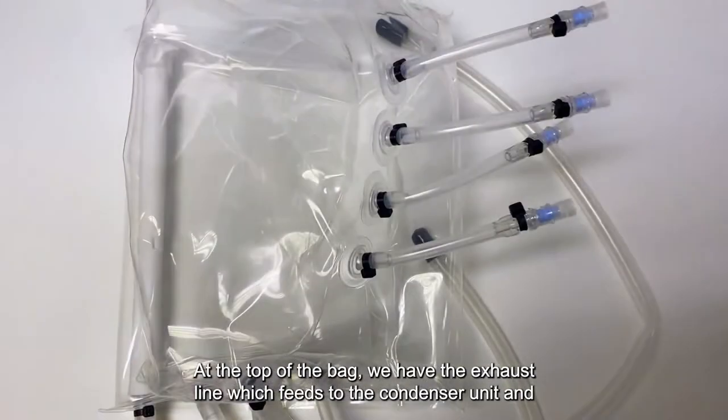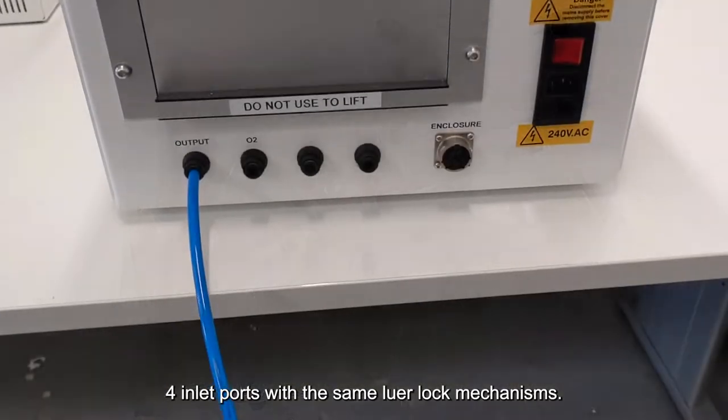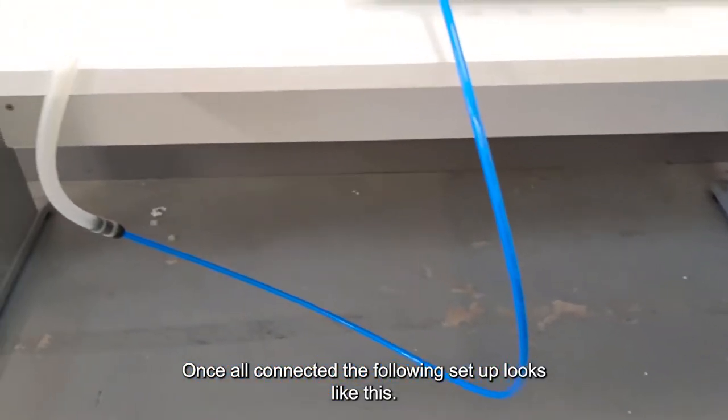At the top of the bag, we have an exhaust line, which feeds to the condenser unit, and four inlet ports with the same luer lock mechanisms. Once all connected, the following setup looks like this.